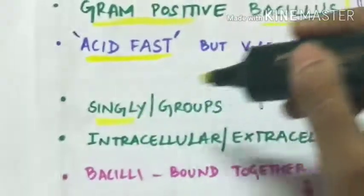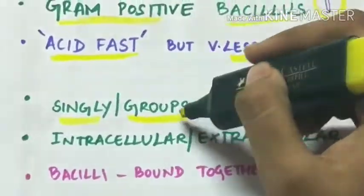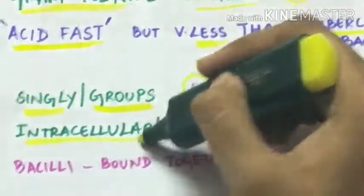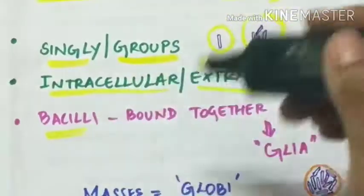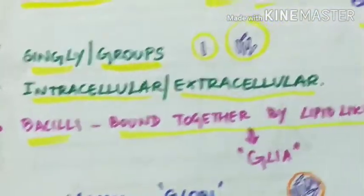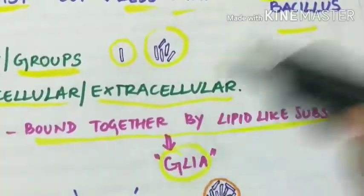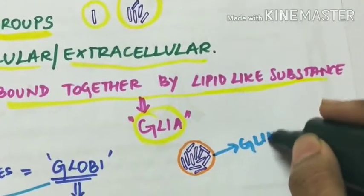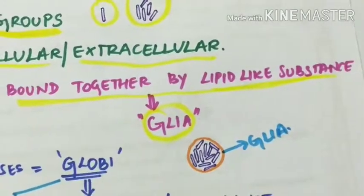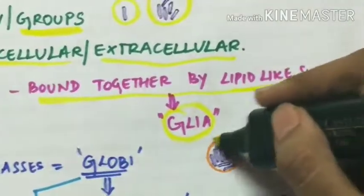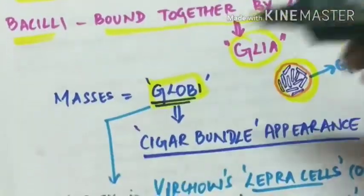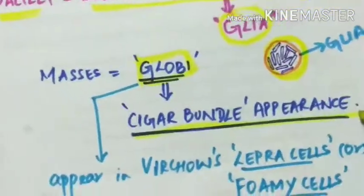They can occur singly and also in groups. They can be both intracellular and extracellular. The bacilli are bound together by a lipid-like substance called glaya. The entire masses are called globi, and they are arranged in a cigar bundle appearance.